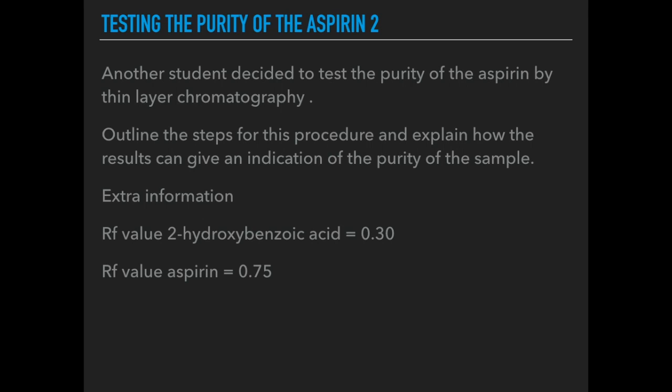For the final part, we're looking at testing for purity using thin layer chromatography. A different student has decided to test the purity of aspirin by TLC. We need to outline the steps for the procedure and explain how the results can give an indication of purity. Extra information is given: RF values for pure 2-hydroxybenzoic acid and for pure aspirin. I've drawn what the TLC would look like, which gives us something to discuss in terms of how the student can tell how pure their aspirin is.